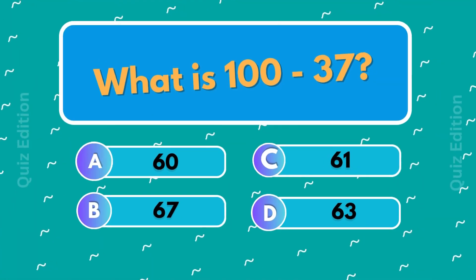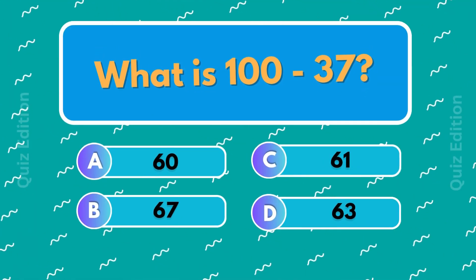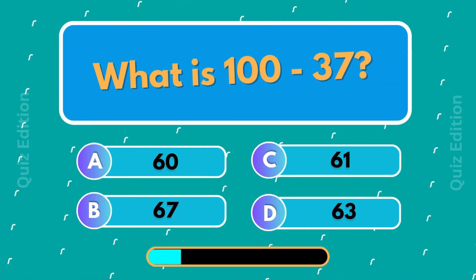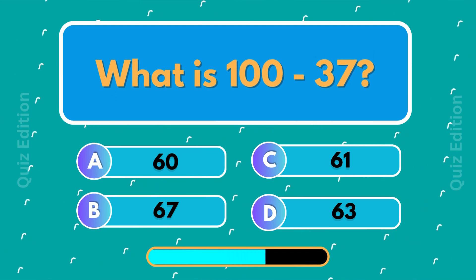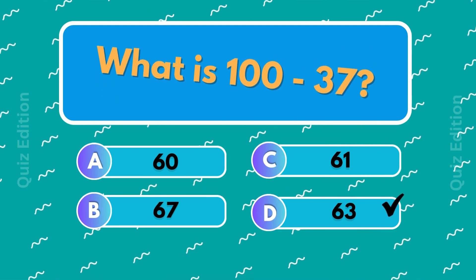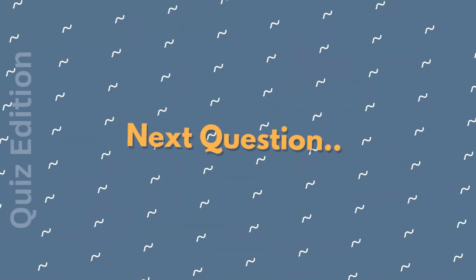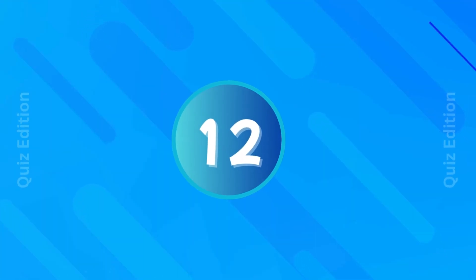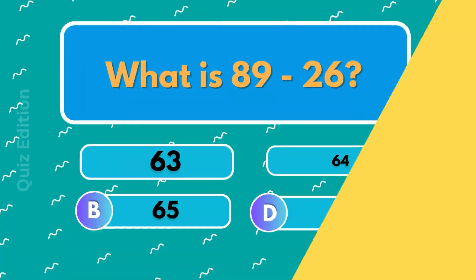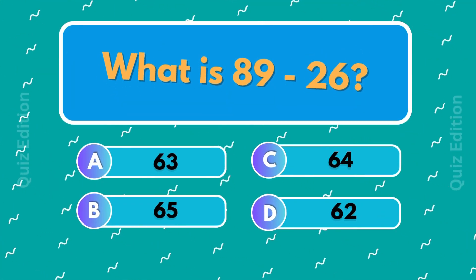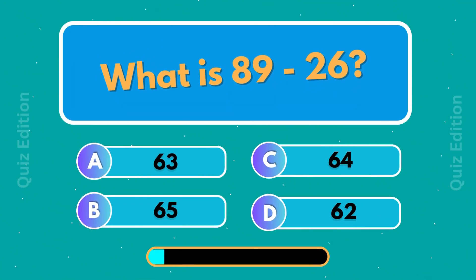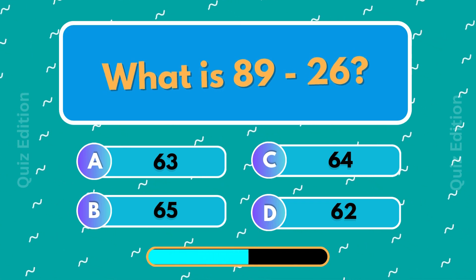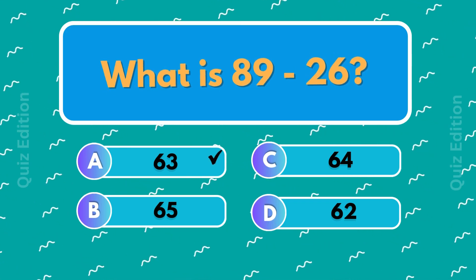What is 100 minus 37? 63. What is 89 minus 26? 63.